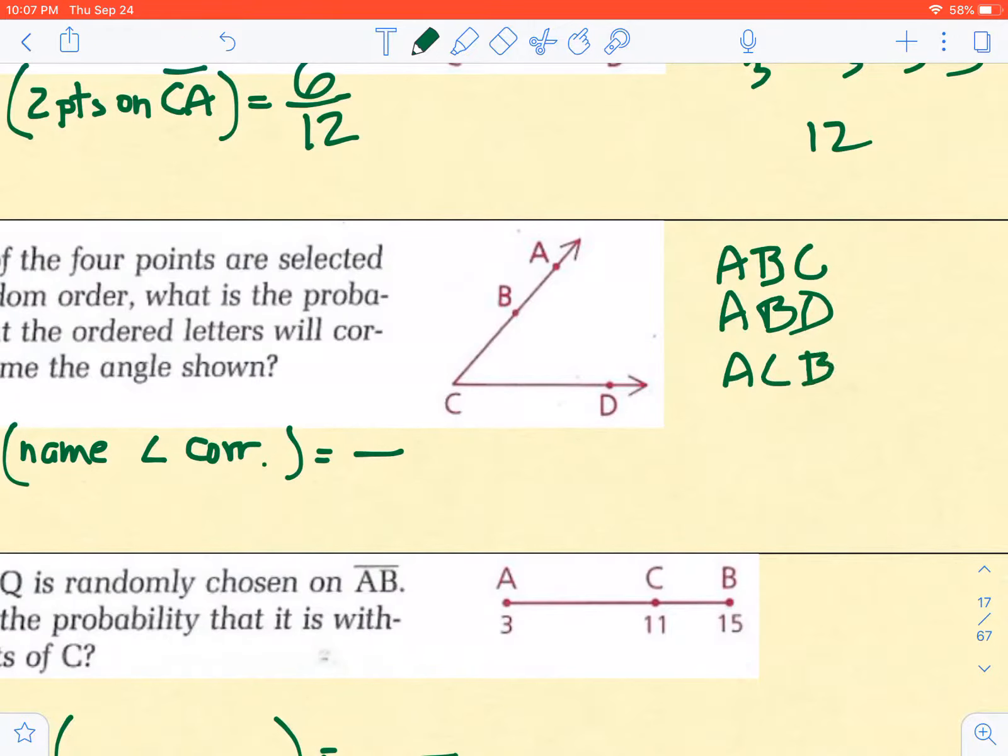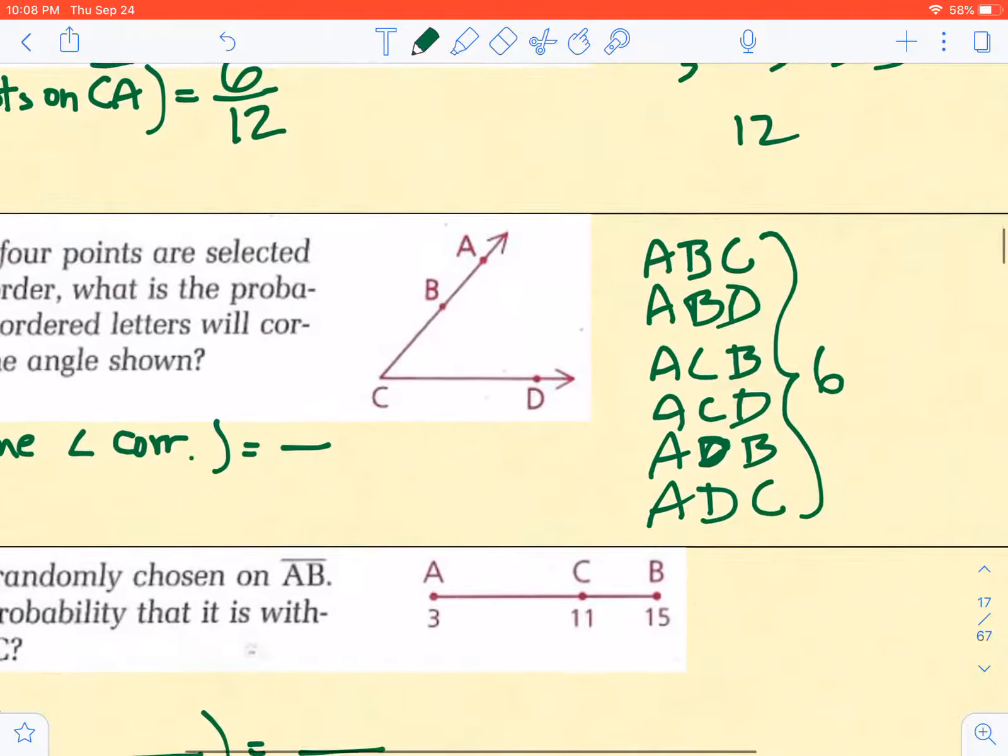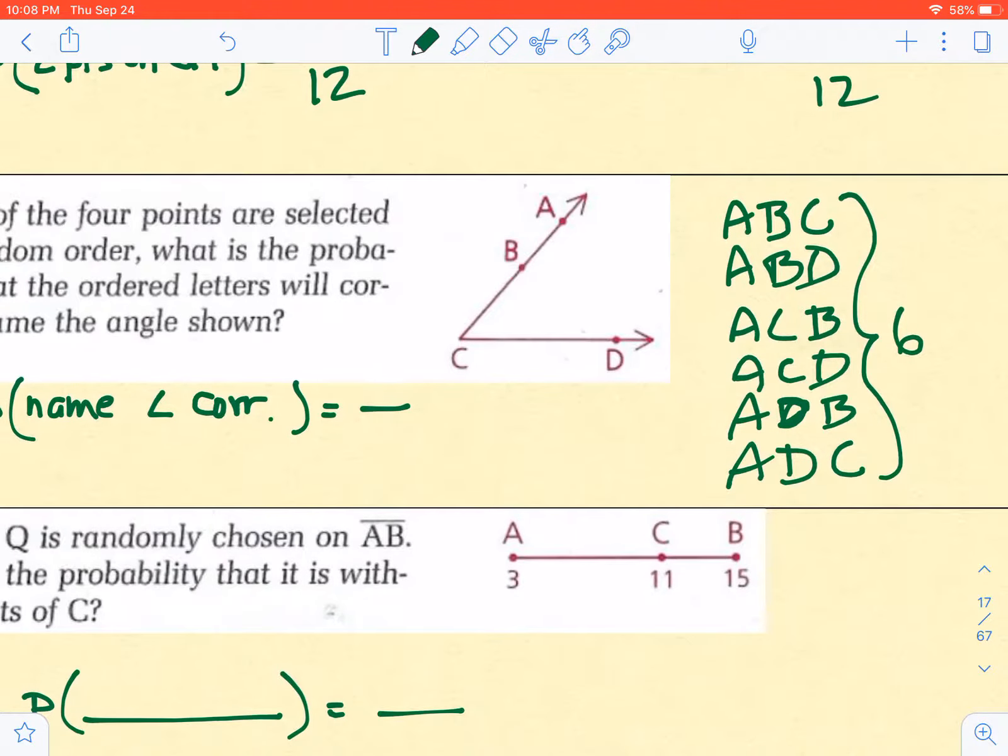AC - you could go B, or ACD. And then ADB, and ADC. So it looks like we have six that start with A. And there would be six that start with B, and six that start with the others. So we would have a total of six times four, 24.